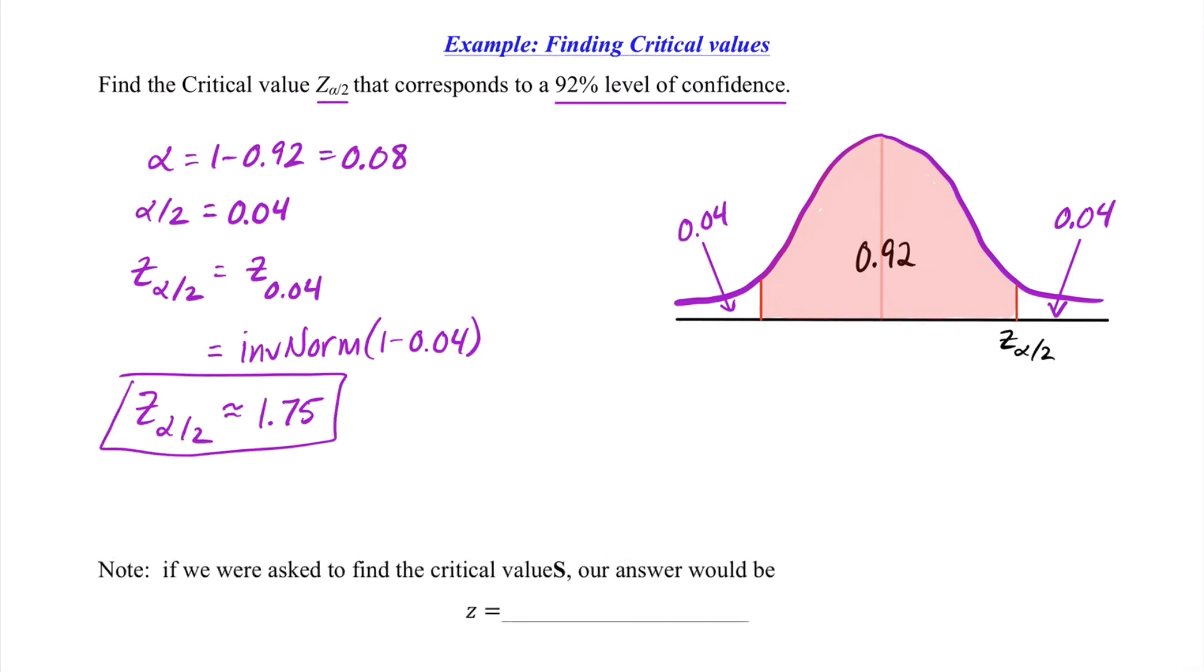Just a quick note, if we're asked to find the critical values, plural, that is, instead of our answer being just 1.75, which is the positive value of Z, critical values, plural, simply refers to the plus or minus of that quantity. That is, if we're ever asked to find critical values, plural, they just want the positive and the negative of that value of Z, so we'd be finding both.